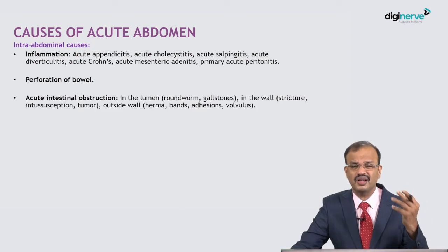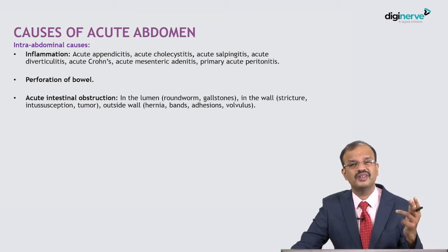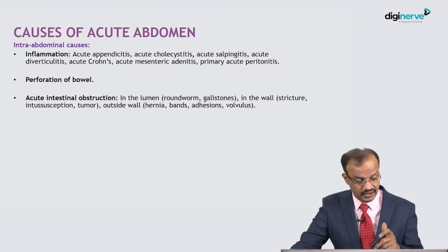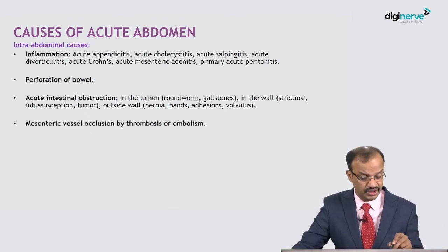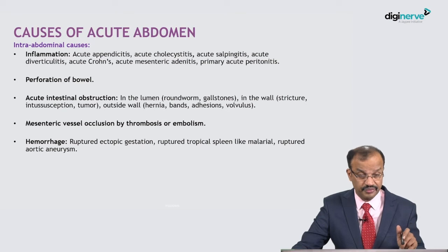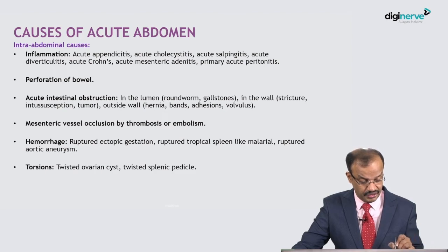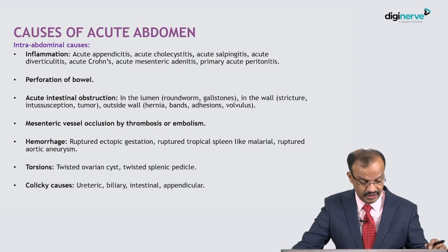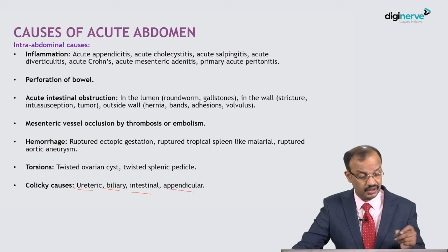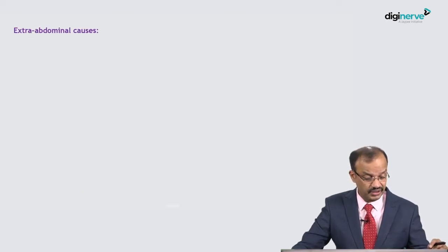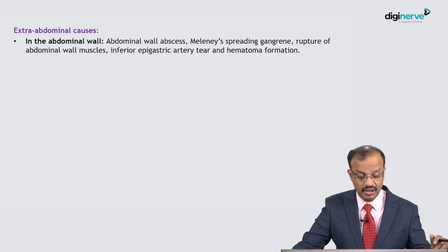Intra-abdominal causes include: cholecystitis, salpingitis, diverticulitis, Crohn's, mesenteric adenitis, primary acute peritonitis, perforation of the bowel, acute intestinal obstruction. Hernia and adhesions are the two very common causes for intestinal obstruction, then malignancy, intussusception, roundworm bolus, suture/tumor bands. Mesenteric vascular occlusion by thrombosis or embolism, hemorrhage, ruptured spleen (e.g., malarial), ruptured aortic aneurysm, torsion of twisted organs, and colic from ureteric, biliary, intestinal, or appendicular spasm.